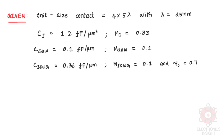All given data is shown here: unit-size contact, psi-naught, lambda, CJ, MJ, CJSW, MJSW, CJSWG, and MJSWG. The explanations and formulas for each parameter are given in the first part of the video.